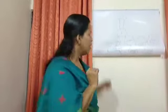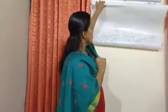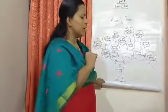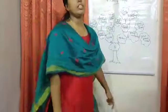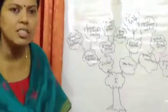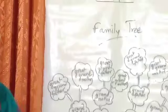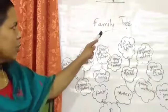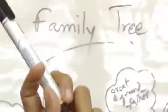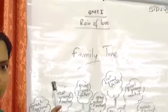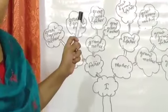I will show you one picture. Look here — it's a picture. What is this picture? Yes, it's a tree. And there is a name for that tree. What's the name of that tree? It is a family tree.